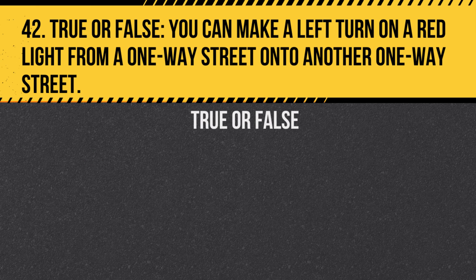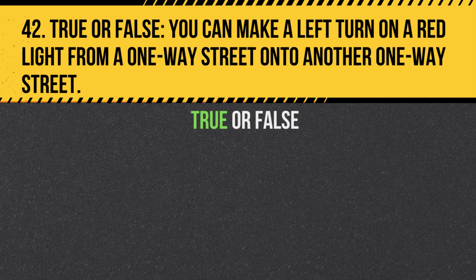Question 42. True or false: You can make a left turn on a red light from a one-way street onto another one-way street. Answer: True. In Alberta, you can make this maneuver after stopping and ensuring it's safe.